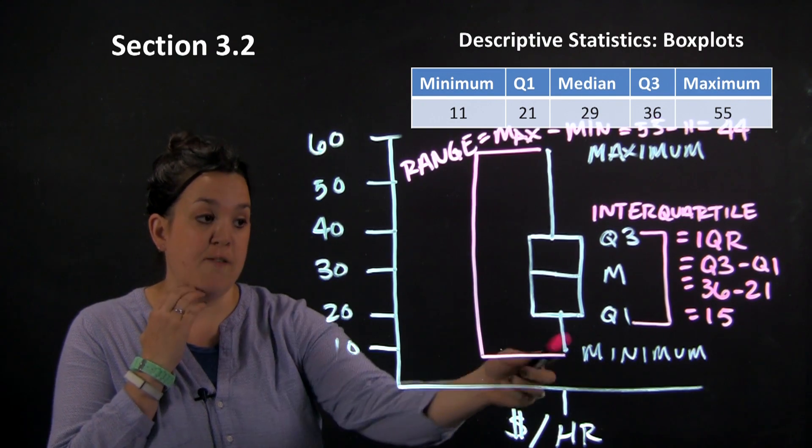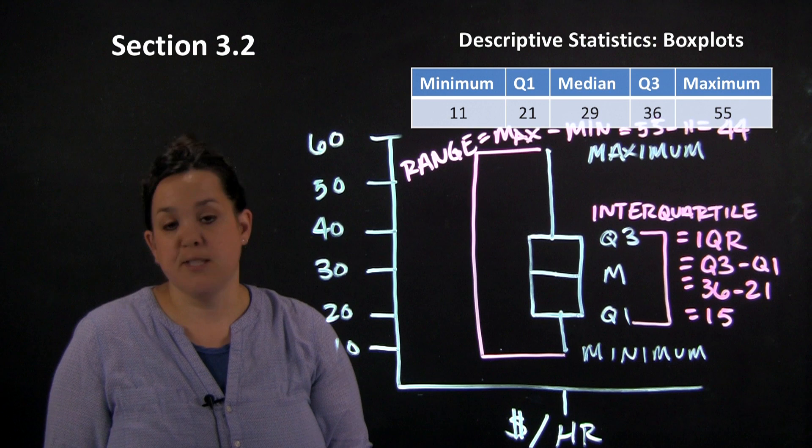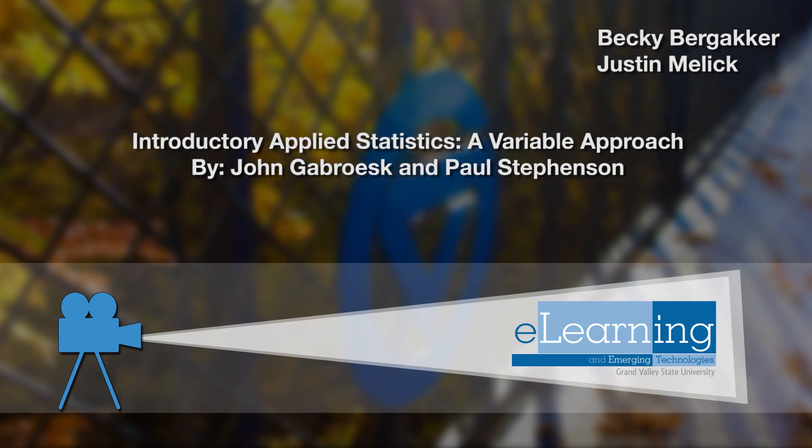So a box plot is making up all five numbers of the five number summary. And this is an example of a simple box plot. Thank you.